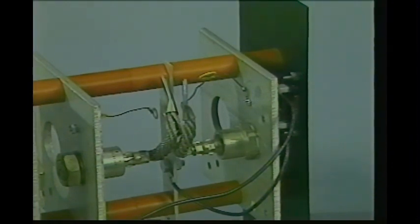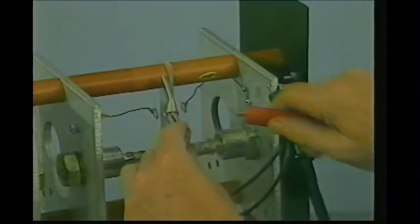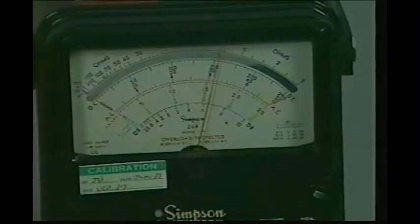You can start with any diode. Fasten one meter lead to the stud. You can use the heat sink. The other meter lead is connected to the pigtail. Observe the meter reading. Notice that it is a low reading but not quite zero.